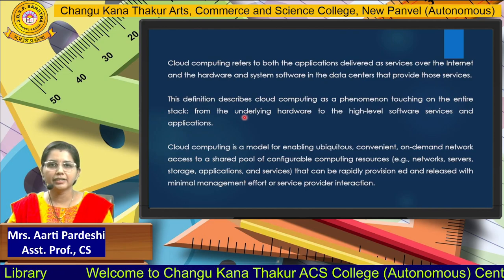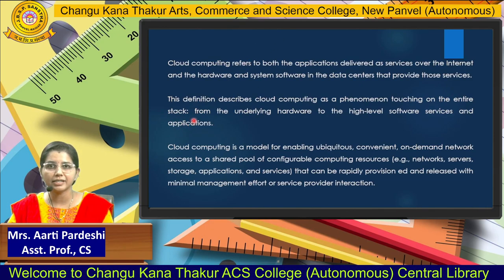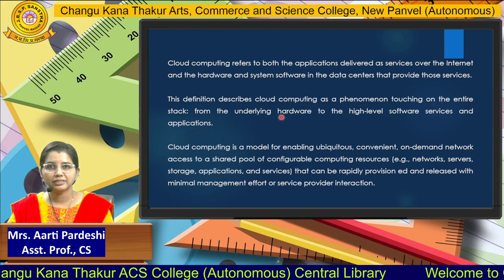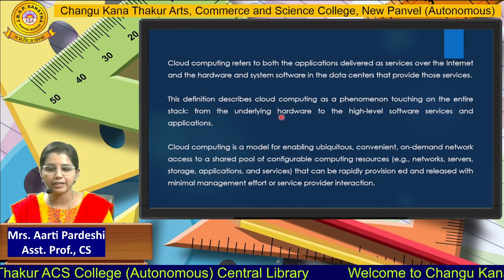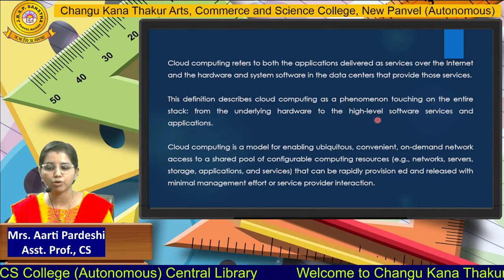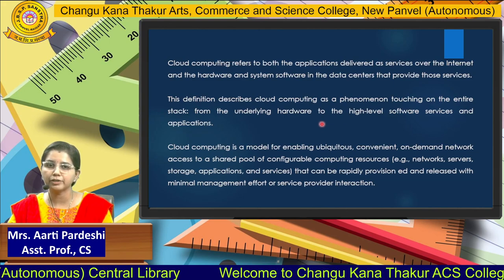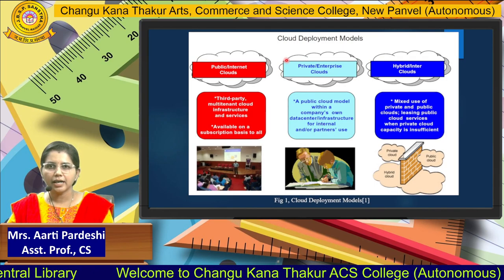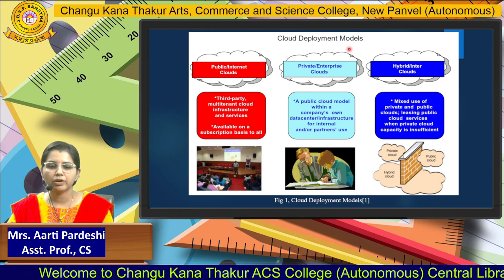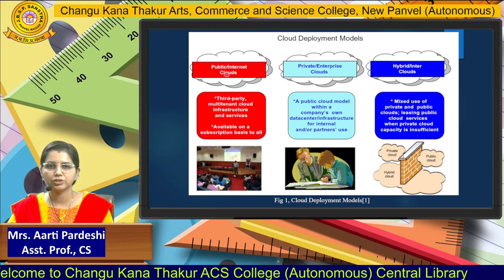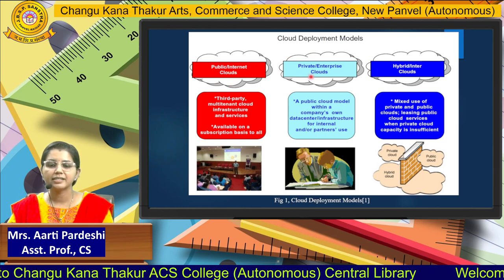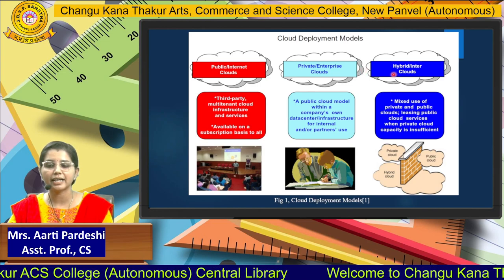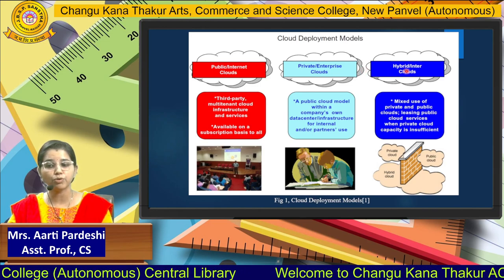Here we can see that it is a full stack. A full stack means you take into consideration the underlying hardware, build some high-level software on top of it, and then deploy your own service. There are basically three cloud deployment models: public cloud (also called internet cloud), private cloud (also called enterprise cloud), and hybrid cloud (also called inter cloud).